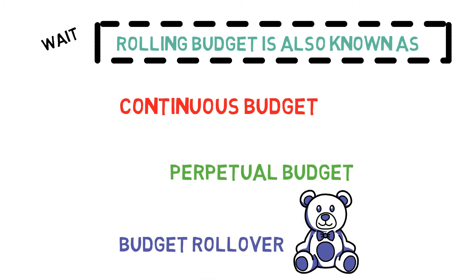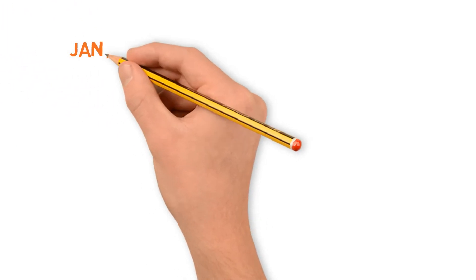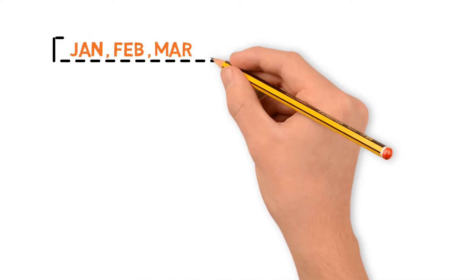So rolling budget has three names: continuous budget, perpetual budget, and budget rollover. Now let's understand rolling budget with the help of an example. Suppose we want to make a budget for three months: January,